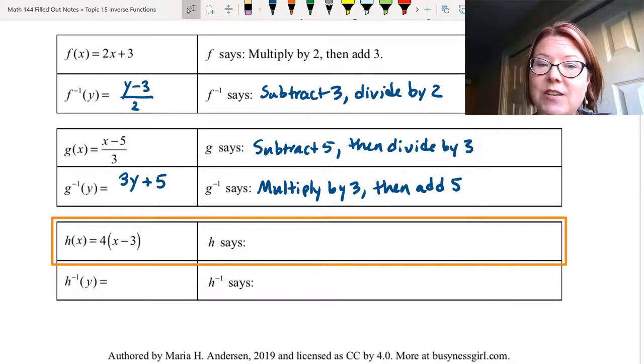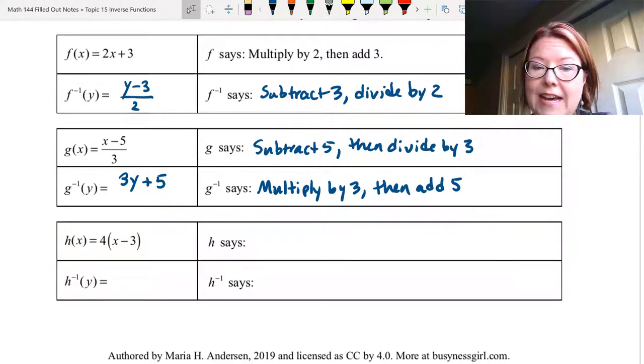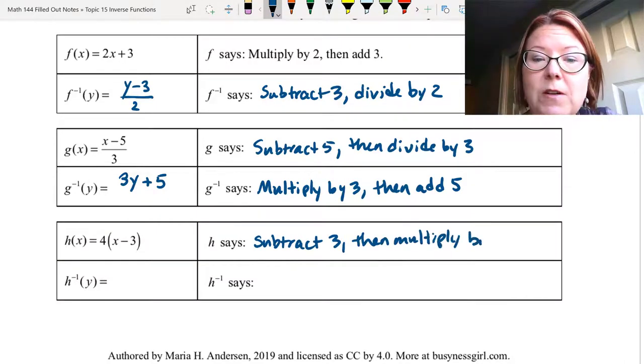h of x equals 4 times left parentheses x minus 3 right parentheses. Right now, h is saying subtract 3, then multiply by 4.